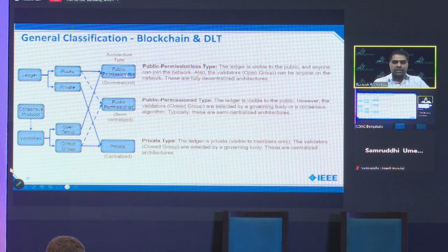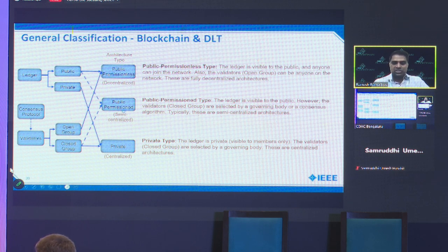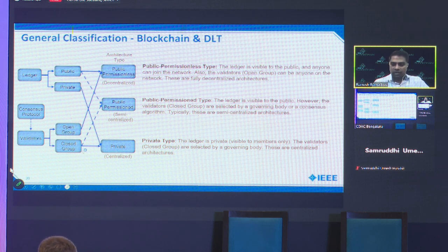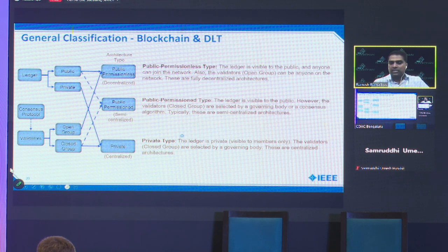With these four concepts — public or private ledger, open or closed validator group — you can come up with different architecture types. Public permissionless blockchains have a public ledger and anyone can join, like Bitcoin. Public permissioned blockchains have a public ledger but only a small group can make changes. Private blockchains have a private ledger and a closed validator group, used by governments and companies. Bitcoin and Ethereum fall under public permissionless or public permissioned categories.